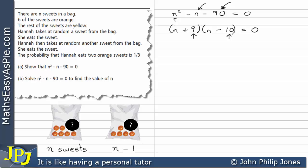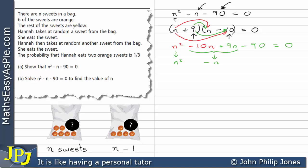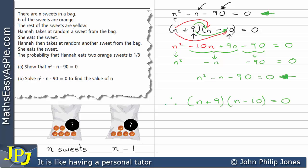So the factored form is (N + 9)(N − 10) = 0. Let's verify by expanding: N squared, then minus 10N, then plus 9N, then plus 9 times minus 10 which is minus 90. Collecting like terms gives N squared minus N minus 90 equals zero — which is exactly what we started with. So the factorization is confirmed correct.